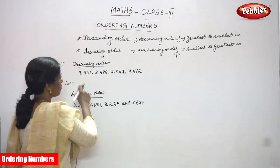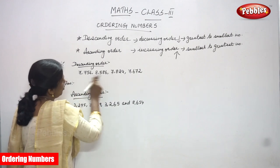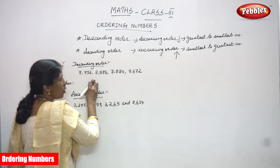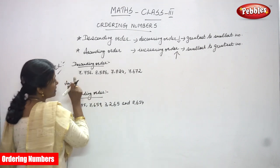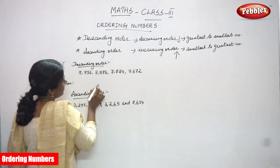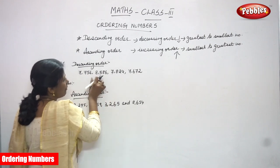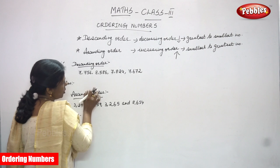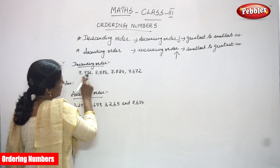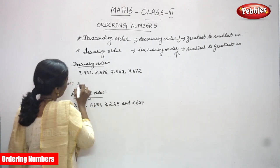First, you have to find out which one is the greatest number. Since all four are four-digit numbers, you have to look at only the thousands place value. The thousands digits are: seven thousand, eight thousand, seven thousand, and seven thousand. Eight thousand is the greatest, so 8586 is written first.